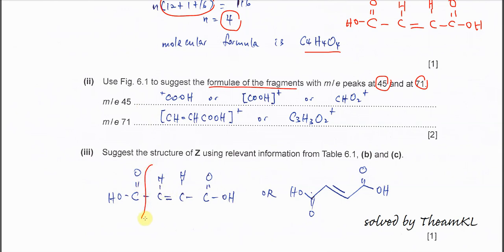Let's say the bond breaks here. You get COOH. COOH itself is 45. You can write COOH+, or in square brackets with positive charge, or CHO2+.